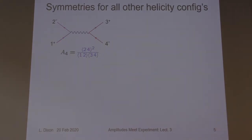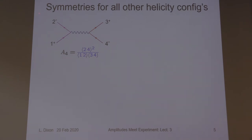That was just one helicity amplitude. In principle, we have two choices for the helicity of each of the four particles, so you might think we have 2^4 = 16 cases. But we have helicity conservation on the fermion line for massless fermions, so most of these are zero. We really only have four choices — because once we fix the helicity of one line, the other is fixed. They're in the four quadrants of this slide and can all be obtained by simple discrete symmetries.